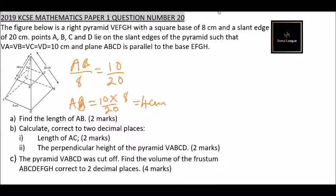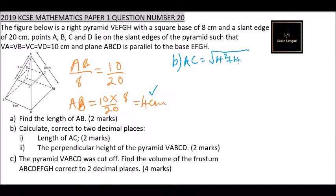For part b, roman numeral one: the length of AC. AC is the diagonal of the upper base ABCD. We found the side of the upper base is 4 centimeters. So AC equals the square root of 4 squared plus 4 squared, which is the square root of 16 plus 16. Using your calculator, this gives 5.66 centimeters.